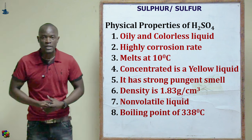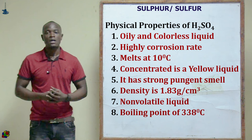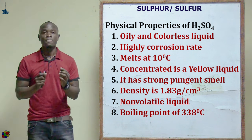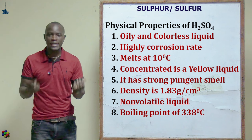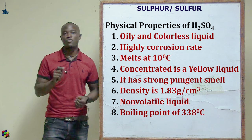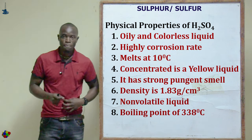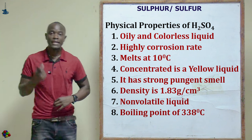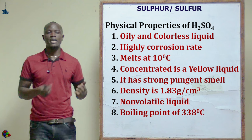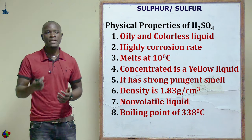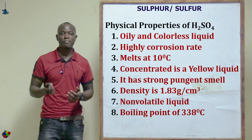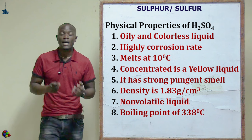Now let's look at the physical properties of sulfuric acid. Sulfuric acid is one of the strongest acids. It is oily and a colorless liquid with a density of 1.83 g/cm³. It is a non-volatile liquid that does not evaporate easily, with a boiling point of 338°C and a melting point of 10°C. It has a very pungent smell and is highly corrosive.